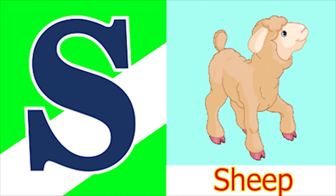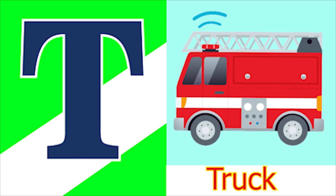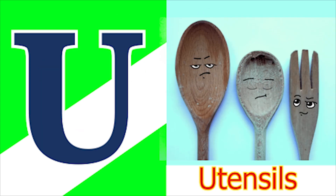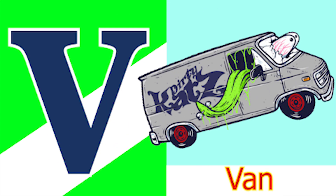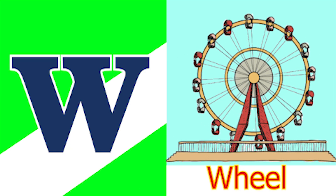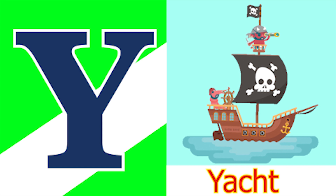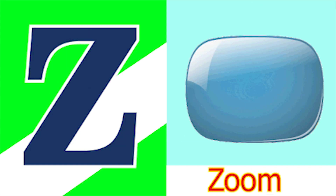S for sheep and T for tub, U for utensil, V for van, W for wheel and X for accessory, Y for yacht and Z for zone.